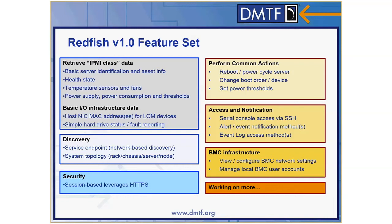Redfish version 1, released in August of 2015, was designed to replicate and replace IPMI over LAN usage. The feature set includes basic inventory of systems, getting the IO infrastructure such as the MAC address of the system, simple hard drive fault reporting, and common actions that users — especially in scale-out environments — would perform, like rebooting the server, performing a power cycle, or changing the boot order. Other infrastructure components and housekeeping items needed to keep a remote management system running are all included. If you watch the other videos in this series, we'll get into a lot of the individual subsystems and all the data that's available.